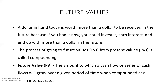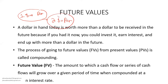Then we have future values. Future value states that if a product is sold for $1 today — say it's a pen — after one or two years, you won't be able to purchase this pen for $1; it will be $2. So $1 is the present value and $2 is the future value. A dollar in hand today is worth more than a dollar to be received in the future, because if you had it now, you could invest it, earn interest, and end up with more than a dollar in the future.